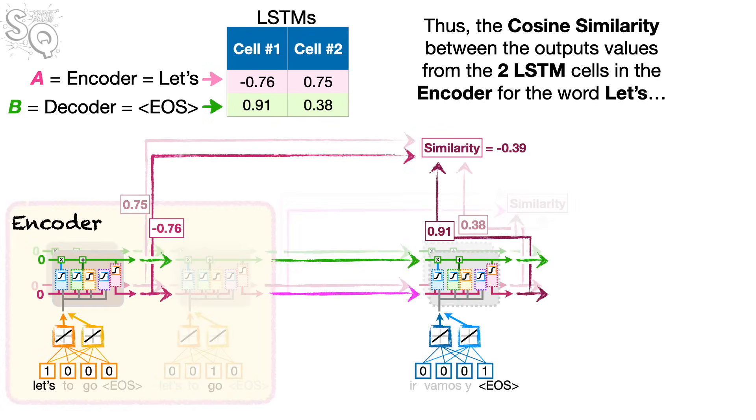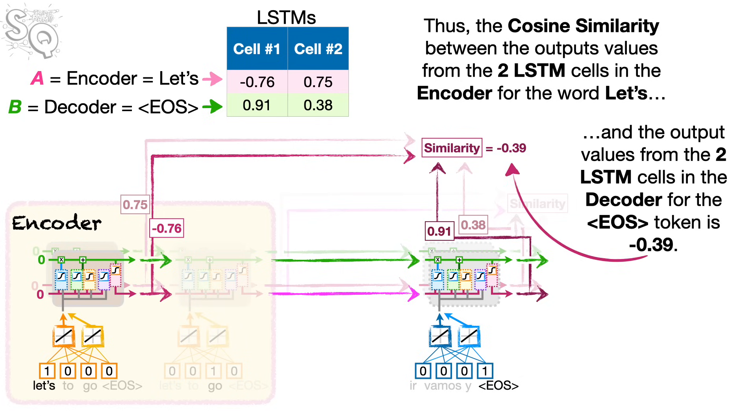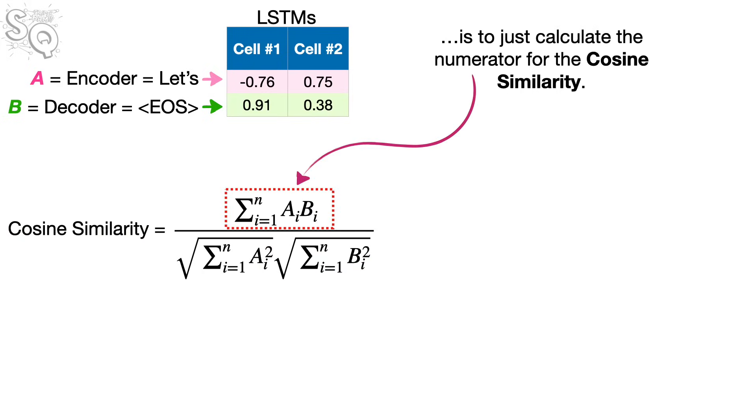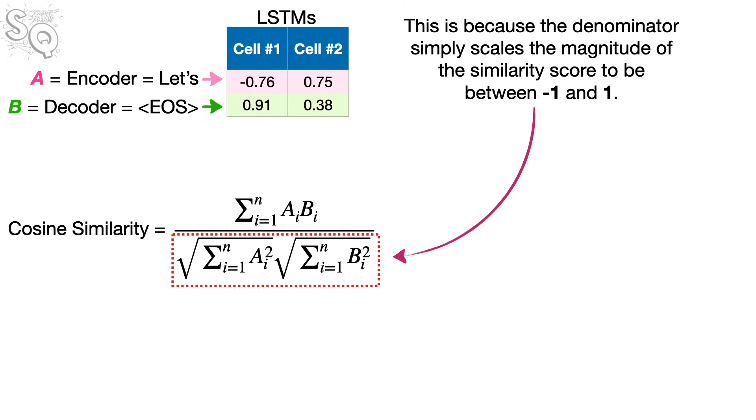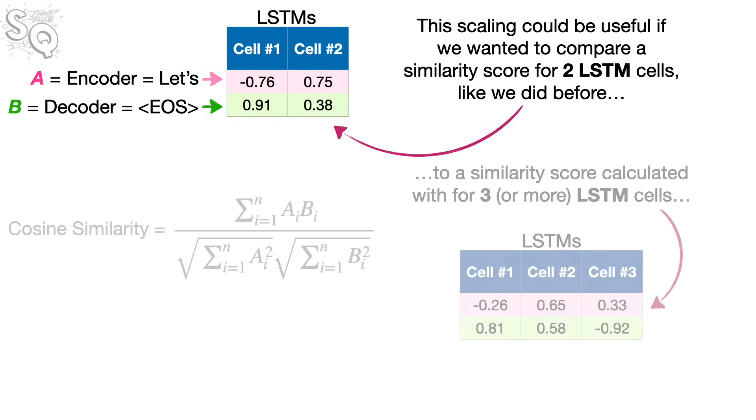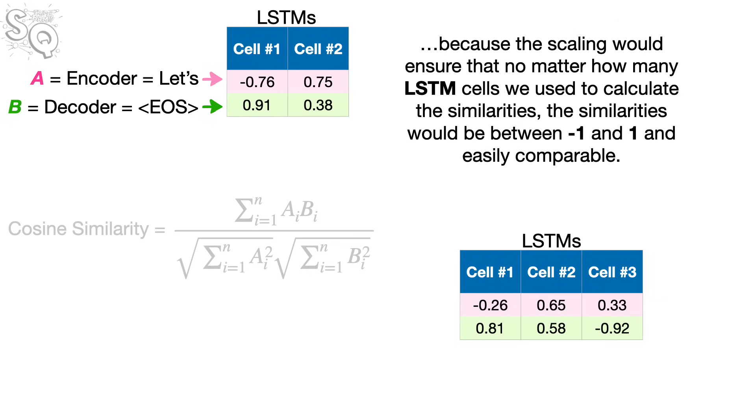Thus, the cosine similarity between the output values from the two LSTM cells in the encoder for the word LETS, and the output values from the two LSTM cells in the decoder for the EOS token is negative 0.39. That being said, a more common way to calculate similarity for attention is to just calculate the numerator for the cosine similarity. This is because the denominator simply scales the magnitude of the similarity score to be between negative 1 and 1. This scaling could be useful if we wanted to compare a similarity score for two LSTM cells, like we did before, to a similarity score calculated with three or more LSTM cells. Because the scaling would ensure that no matter how many LSTM cells we use to calculate the similarities, the similarities would be between negative 1 and 1 and easily comparable. In other words, the denominator removes the magnitude of the similarity.